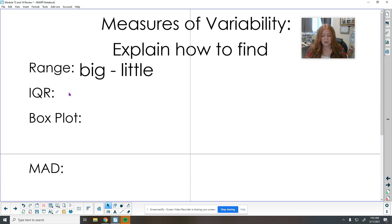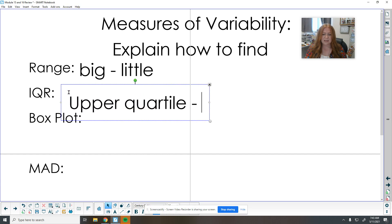So to do the IQR, we take the upper quartile and we subtract the lower quartile.